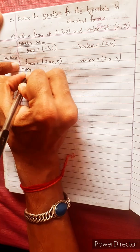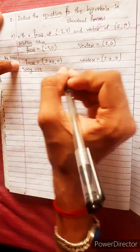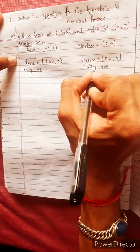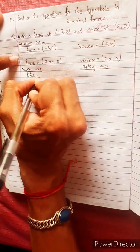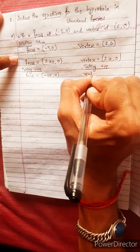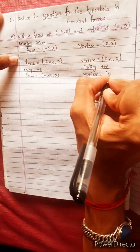Now this side taking negative. This side taking positive. Focus equals minus ae, 0. Vertex equals a, 0.